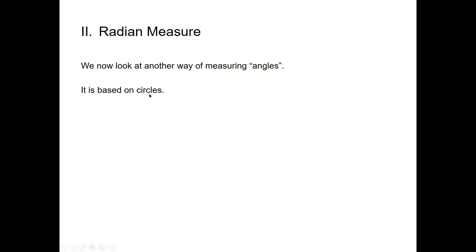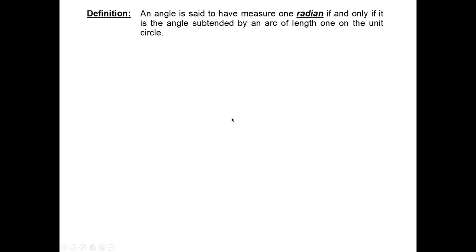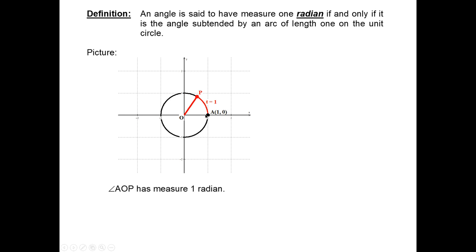Radian measure is our second topic. We now look at another way of measuring angles — we already have degrees (and degrees, minutes, seconds). Radian measure is based on circles. Definition: an angle is said to have a measure of one radian if and only if it is the angle subtended by an arc of length one on the unit circle.